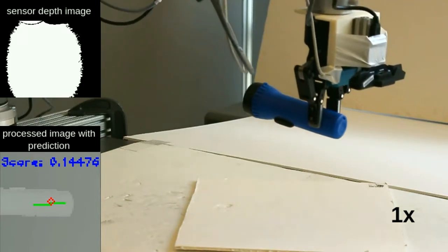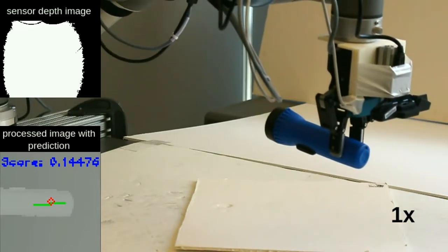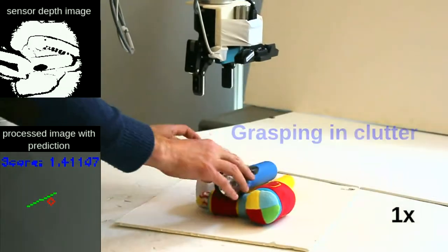The fast update rate enables our controller to handle a degree of uncontrolled object motion during grasping.